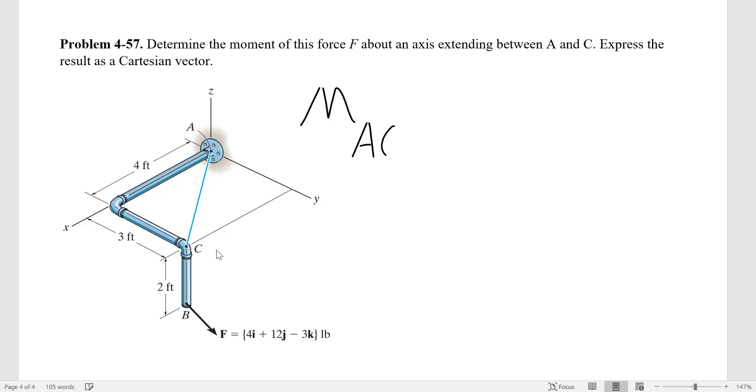The moment about axis AC would be the unit vector of that axis dot product with R cross F. So we need to determine three vectors: the unit vector, the position vector, and vector F. This problem has given us the vector F in Cartesian form, so we just need to find UAC and R.